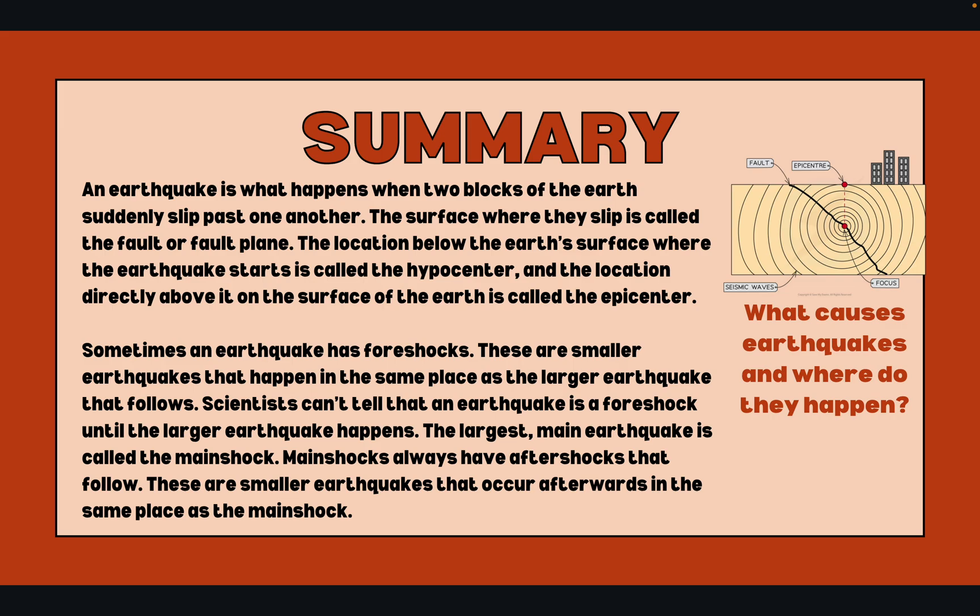To debrief you a little bit: the Earth has four major layers — the inner core, outer core, mantle, and the crust. The crust and the top of the mantle make up a thin skin on the surface of our planet. But the skin is not all in one piece — it is made up of many pieces like a puzzle covering the surface of the Earth.